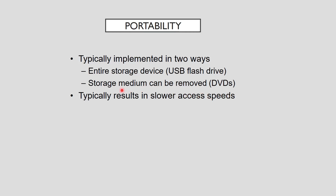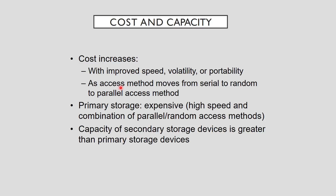Portable secondary storage devices and devices with removable storage media typically have slower access speeds than permanently installed devices with non-removable media. Each storage device attribute described so far is related to device cost per unit of storage. Improving speed, volatility, or portability increases cost per unit when all other factors are held constant. Cost per unit also increases as the access method moves from serial to random to parallel.